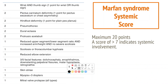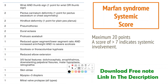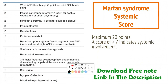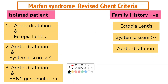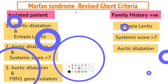The systemic score is a method of assigning weighted values to the presence of characteristic abnormalities in cardiovascular, ocular, and other organ systems that are associated with Marfan syndrome. These are all self-explanatory; points are given according to the signs. This is the revised Ghent criteria, which is used for the diagnosis of Marfan syndrome.